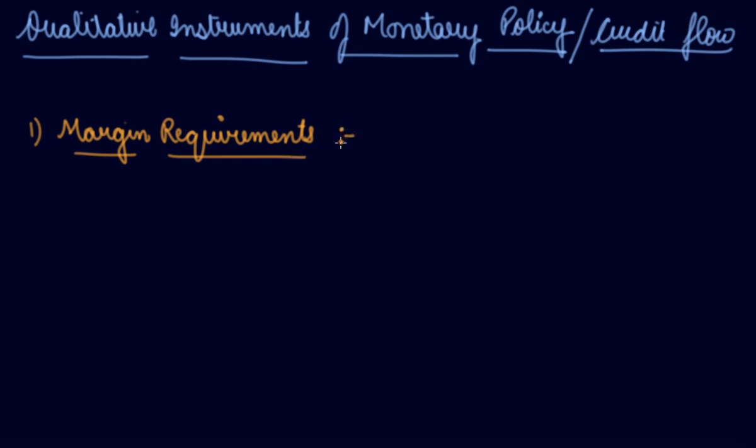What is the margin requirement? Suppose you have given the collateral security that you have to give if you have to take the loan from the bank. The value is, say, rupees 100 and bank gives you loan of rupees 80, so the margin requirement is 20% on this.